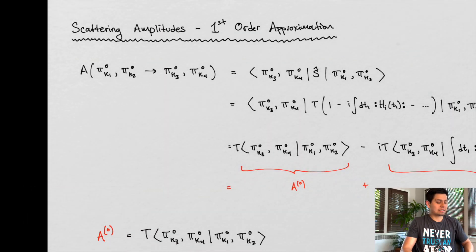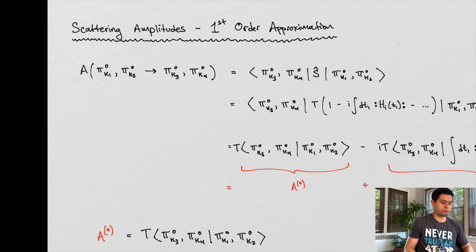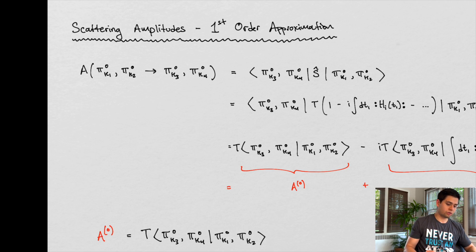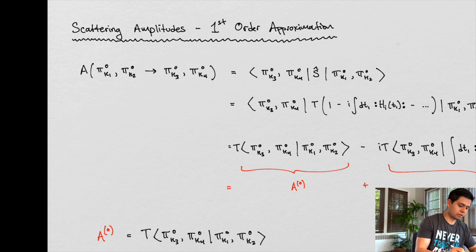Make sure to hit that like and subscribe button. So we're covering scattering amplitudes and we're going to do a zeroth order approximation. This here is a zeroth order approximation, and I'll explain what exactly that means.